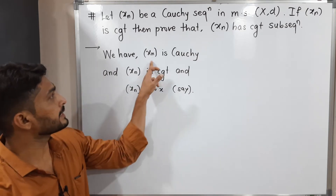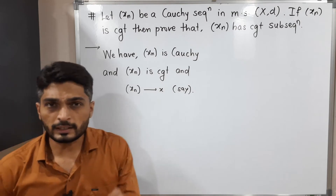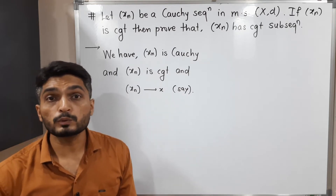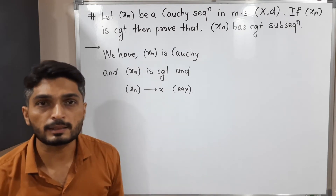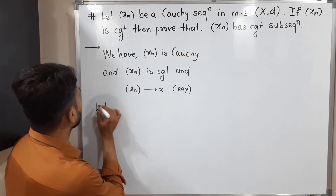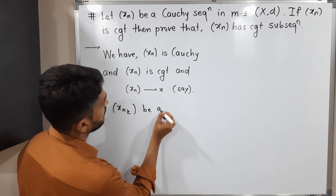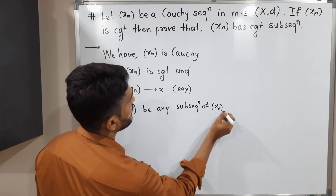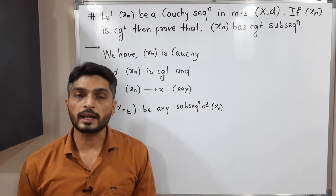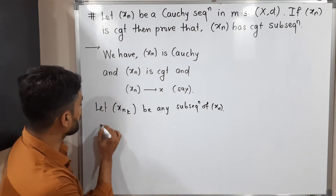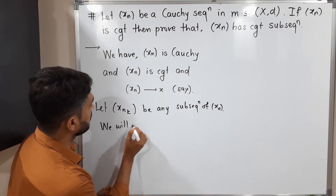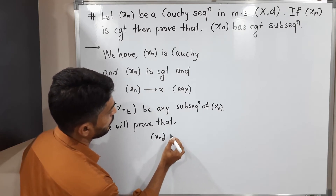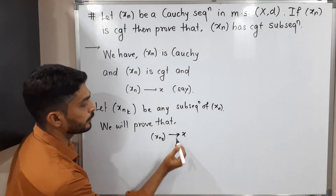I have written the given information: Xn is Cauchy and it is convergent. You know that if a sequence is convergent, it converges to some point — I'm calling it X. So we have to prove that it has a convergent subsequence. Let XnK be any subsequence of Xn. We are going to prove it is convergent and converges to X.